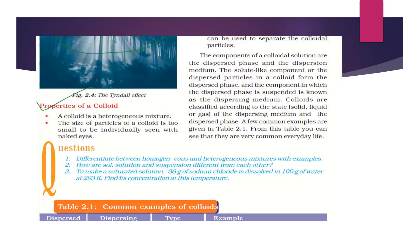Now, what are the properties of a colloid? A colloid is a heterogeneous mixture. The size of the particles of a colloid is too small to be individually seen through the naked eye. So a colloid is a very small particle — it is a heterogeneous mixture and the particles are too small to be seen with the naked eye individually.